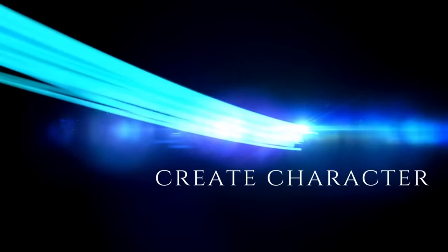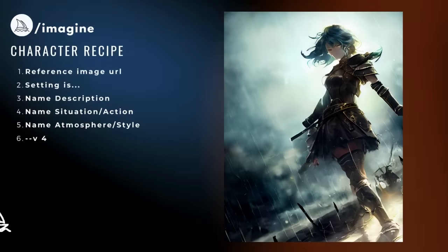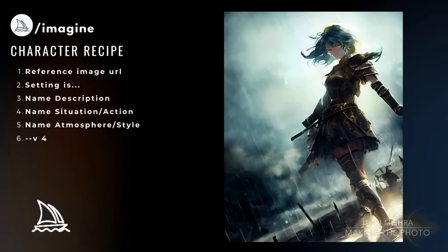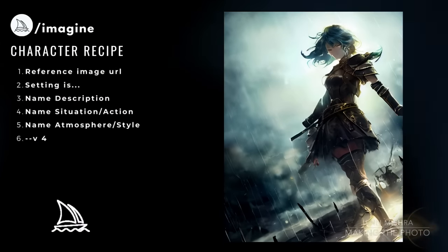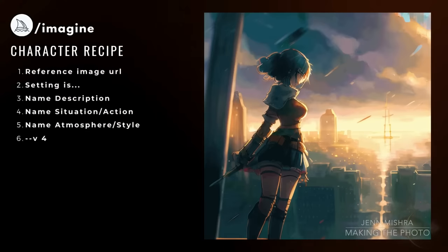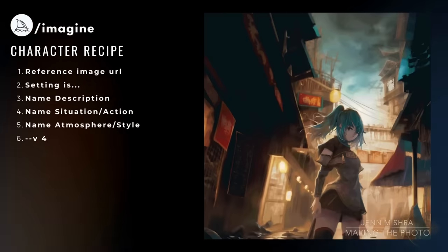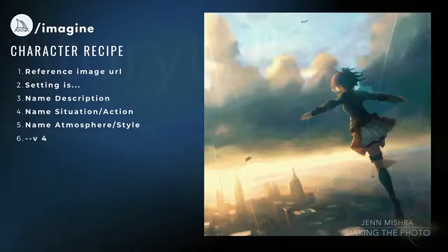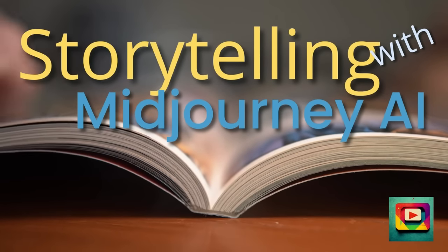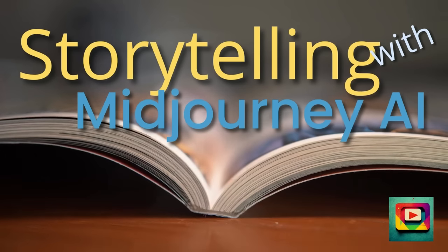You can use images in your prompt to create a character and use it in a story. Use an image of the character — either an AI-generated image, a sketch, or a photo — and move the character to different settings throughout your story. I have a whole video on how to do this using a reference image and a prompting recipe. I'll put a link in the description below.